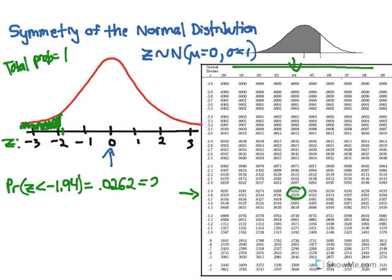Which, if we write it in percentage form, we just move the decimals over two places. And, it's 2.62%. That's exactly what we thought. We thought it would be a very low chance that we're going to fall to the left of negative 1.94 standard deviations away from the mean.